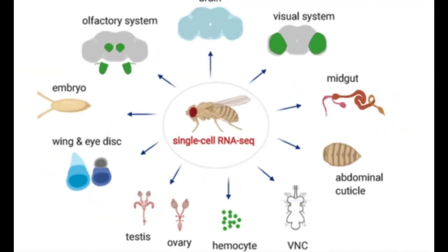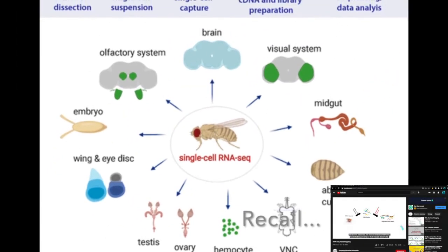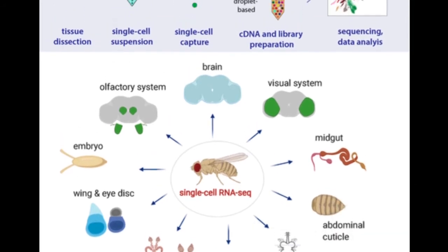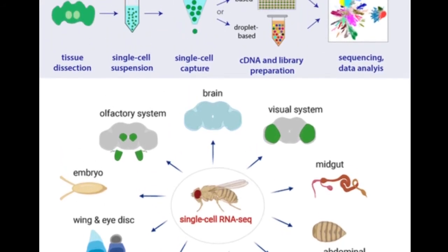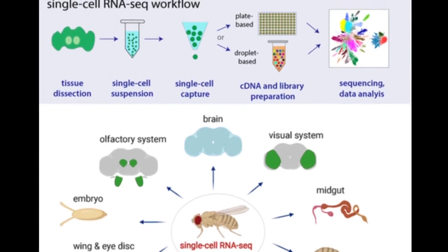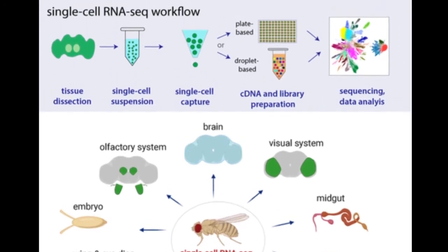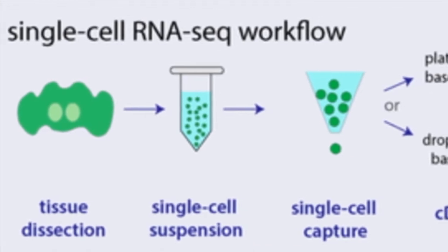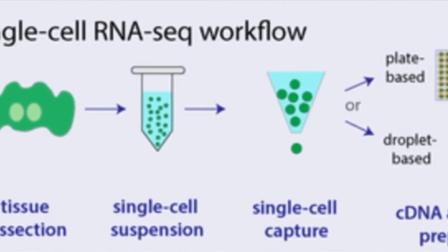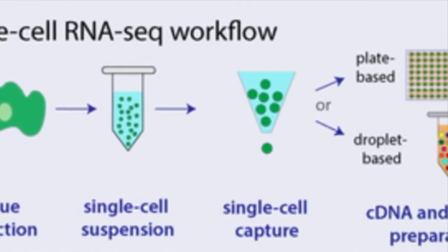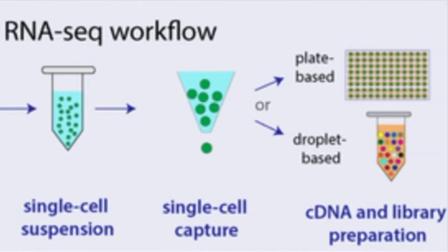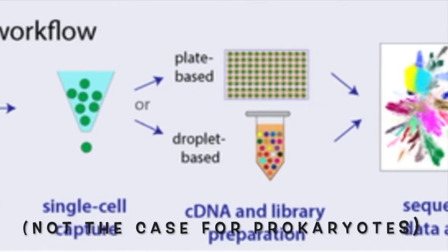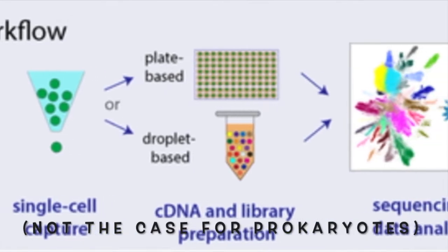There are multiple ways to go about this process, but basically, a sample of the specimen's cells in question is lysed so that the contents of the cell, including the mRNA, can be collected and purified by running the lysate mixture through or over some sort of medium that has a high affinity and specificity for the mRNA molecules, often by taking advantage of the fact that poly-A tails are generally unique to mature, processed mRNA.